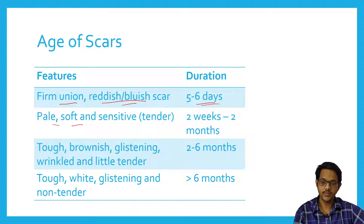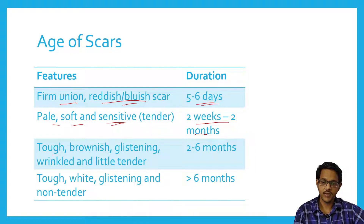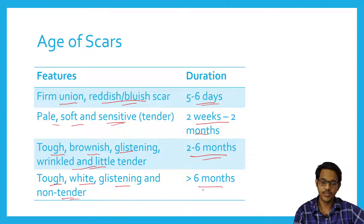If the scar is pale, soft, and tender — painful when touched — it may be two weeks to two months old. If it is tough, brownish, glistening, and wrinkled or slightly tender, then it is about two to six months old. If it is tough, white, glistening, and non-tender, it is usually more than six months old. Fresh scars are tender, and as time progresses, tenderness decreases and the scar becomes tough with a white glistening surface.